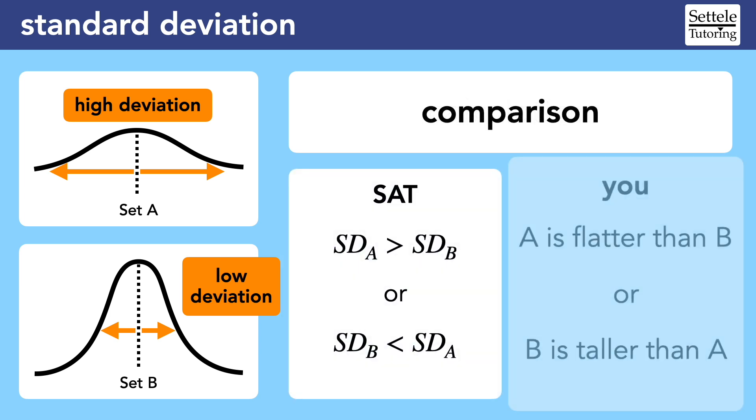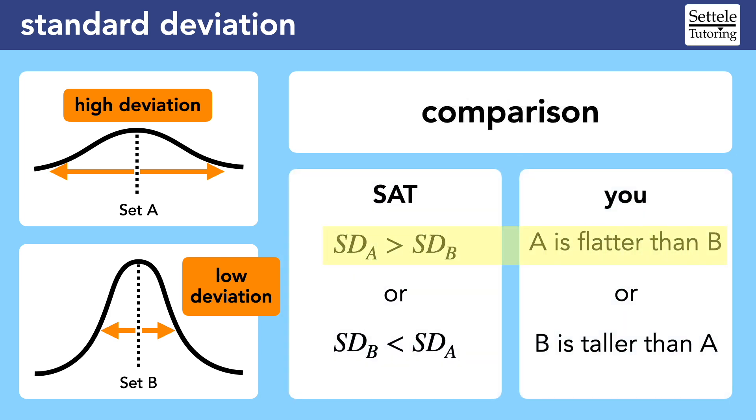The SAT will mostly ask us to compare the standard deviations of two data sets based on the shape of the data. For sets A and B, a correct SAT answer choice might say that the standard deviation of set A is greater than the standard deviation of set B. We would more casually say that the shape of set A is flatter than the shape of set B.